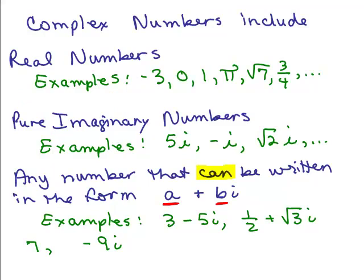The complex numbers include all numbers: the real numbers like negative 3, 0, 1, pi, square root of 7, three fourths — which can be zero, negative, positive, rational, or irrational. The pure imaginary numbers are any real number times i, like 5i, negative i, square root of 2 times i. Any number that can be written in the form a plus bi is called a complex number.